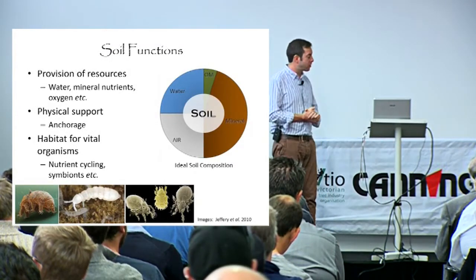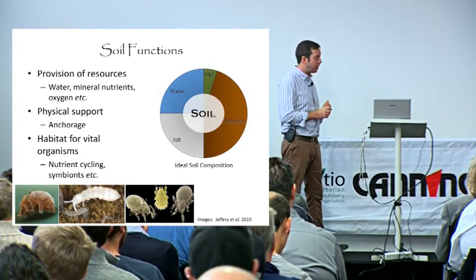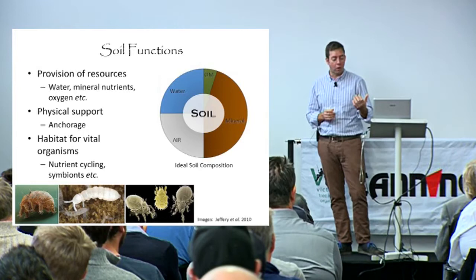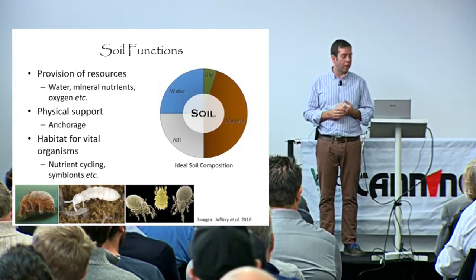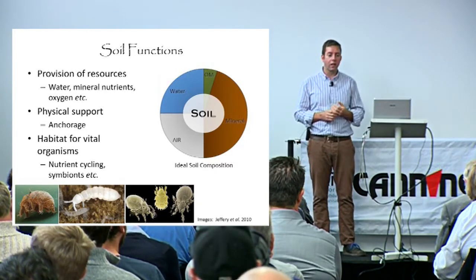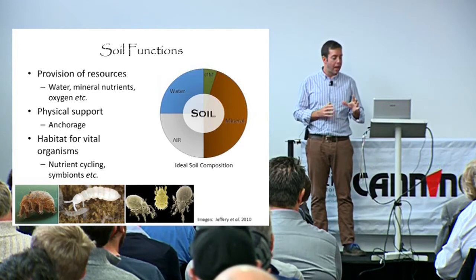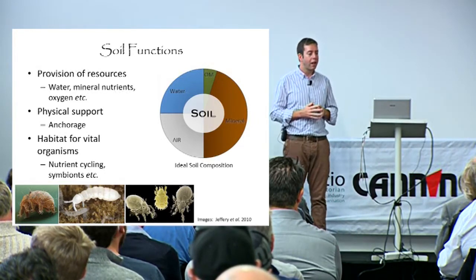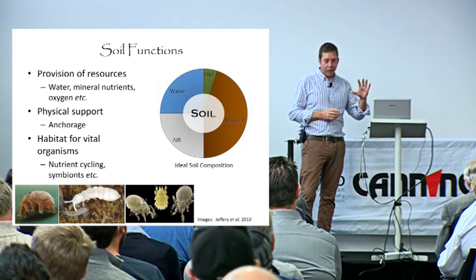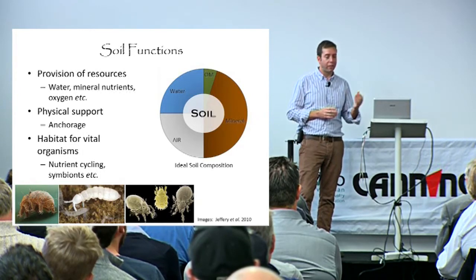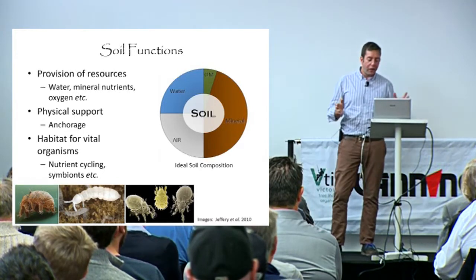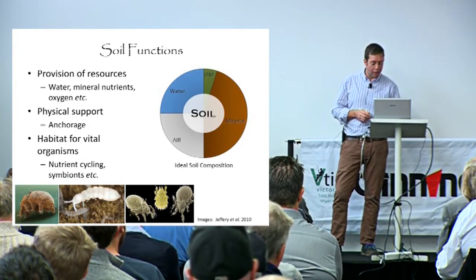By way of a gentle introduction, let's remind ourselves what the key soil functions are. Primarily the provision of resources — water, nutrients, oxygen — and physical support. But soils also act as a vital habitat for a variety of microorganisms and fungi that are really key for cycling and absorption of nutrients. A typical horticultural textbook composition of soil would be around 5–10% organic matter, 45% mineral matter, and then 25% air and 25% water. That's considered the ideal soil, and if you aim for that sort of composition you're not doing too much wrong.